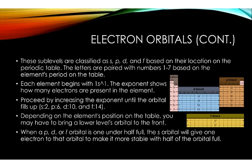These sublevels are classified as S, P, D, and F based on their location in the periodic table. The letters are paired with numbers 1 through 7 based on the element's period on the table.